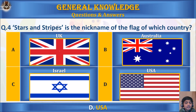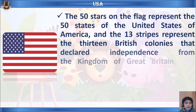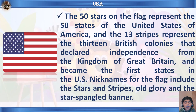The answer is D) USA. The 50 stars on the flag represent the 50 states of the United States of America, and the 13 stripes represent the 13 British colonies that declared independence from the Kingdom of Great Britain and became the first states in the US. Nicknames for the flag include the Stars and Stripes, Old Glory, and Star-Spangled Banner.